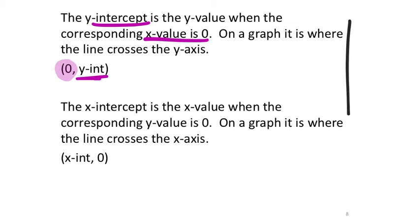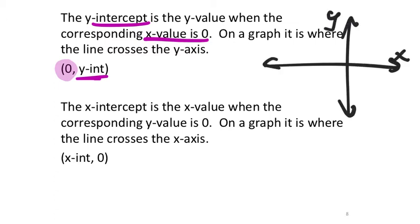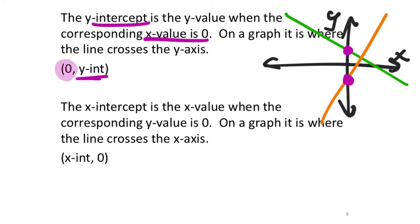What does this mean on a graph? If you put a line on a graph, the y-intercept is where that line crosses the y-axis. The x value there is always zero because right where the two axes meet, that's the x value of zero — the y-intercept is always on that x value of zero.